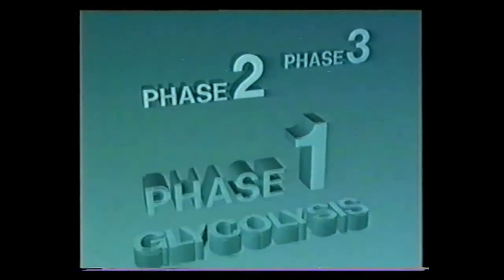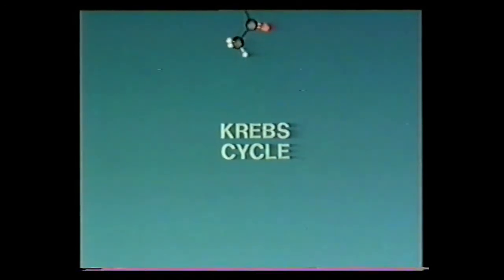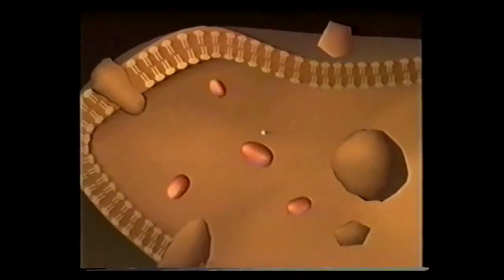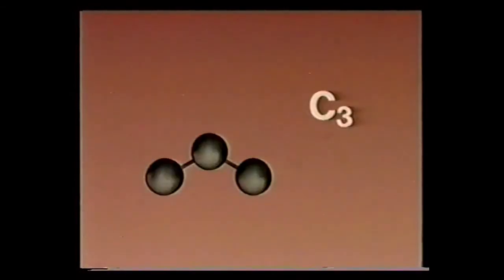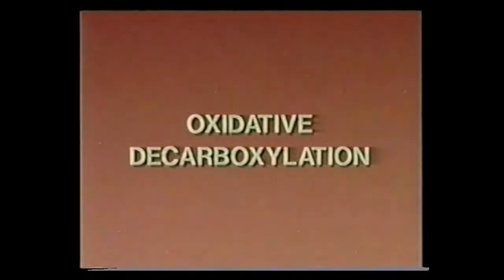In the second phase of cellular respiration, the Krebs cycle more energy is released by metabolizing pyruvate. The Krebs cycle was named after British biochemist Hans Krebs, who traced pyruvate beyond glycolysis. Inside the cell, pyruvate moves from the cytosol through both mitochondrial membranes into the matrix. Here in the matrix the Krebs cycle takes place. Pyruvate is a three-carbon molecule, but the Krebs cycle uses a two-carbon molecule as its starting point, so an intermediate process — oxidative decarboxylation — is required.